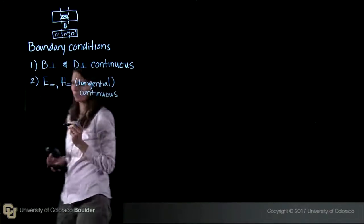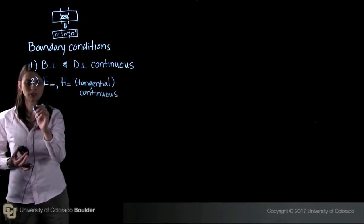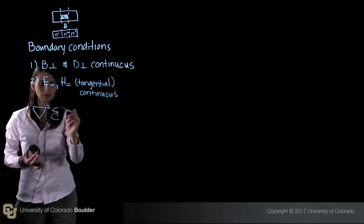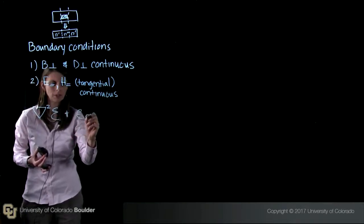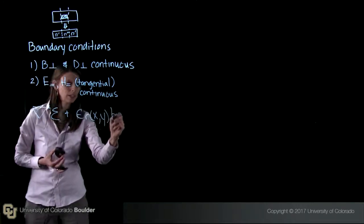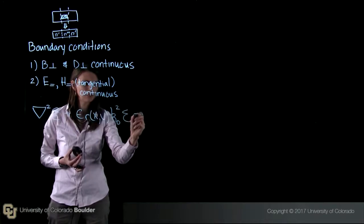The next thing we can do is we can solve the wave equation. The wave equation essentially says del squared of the electric field plus epsilon r of x, y, k-naught squared, e equals zero.